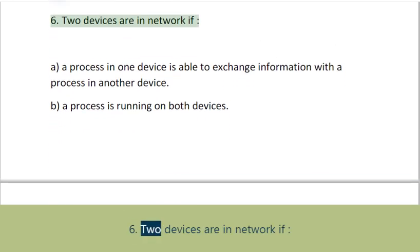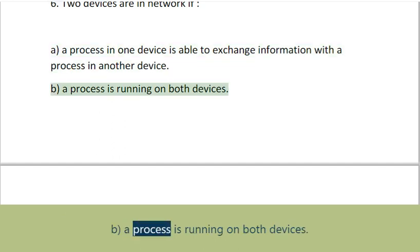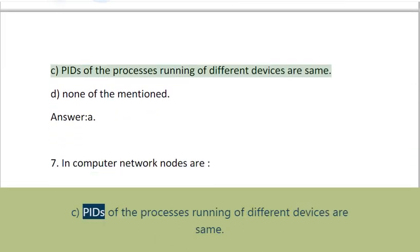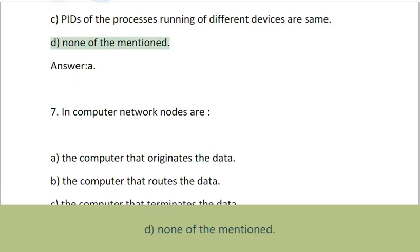Question 6: Two devices are in network if: A. A process in one device is able to exchange information with a process in another device, B. A process is running on both devices, C. Pins of the processes running of different devices are same, D. None of the mentioned. Answer: A.